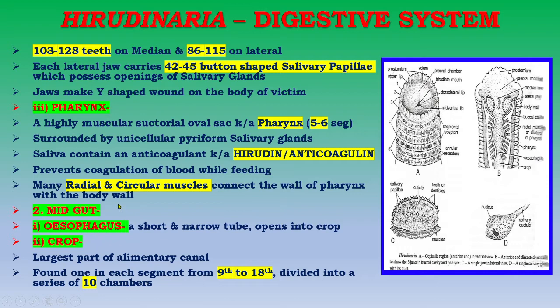In the diagram you can see the prostomium, the pre-oral chamber, the median jaw, the lateral jaws, and the body wall. The cavity leads into the pharynx, then the esophagus, then the crop. Many radial muscles or dilators of the pharynx are present, which produce the suckling or suction action of the pharynx.